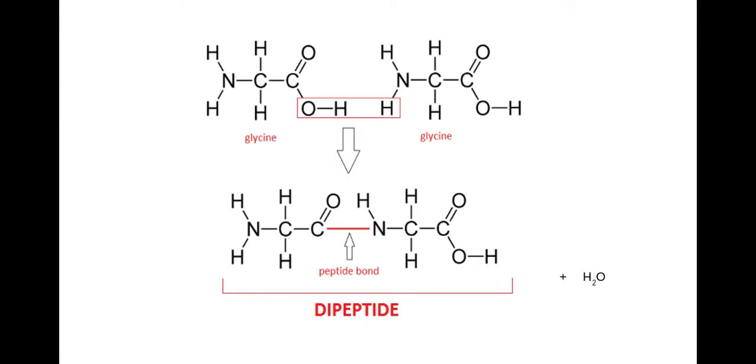The next thing we need to be aware of is that a dipeptide can form. So di means two. A dipeptide is two amino acids joining together to form a dipeptide. Now obviously when two monomers join together in a condensation reaction water is removed. So again this is very popular on the mark scheme to draw.